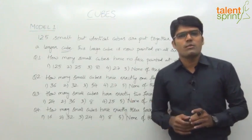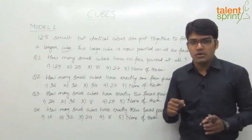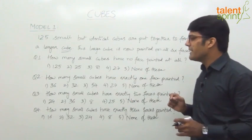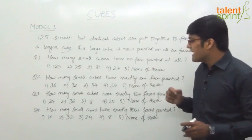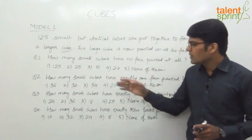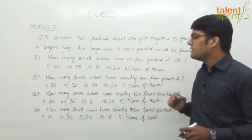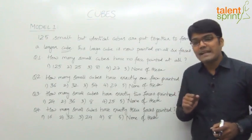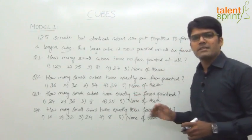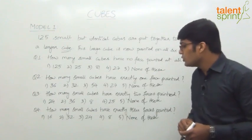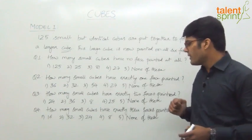Now four questions follow. Question 1: How many small cubes have no face painted at all? Options: 125, 25, 81, 27, none of these. Question 2: How many small cubes have exactly one face painted? Options: 36, 32, 54, 27, none of these. Question 3: How many small cubes have exactly two faces painted? Options: 24, 36, 8, 125, none of these. Question 4: How many small cubes have exactly three faces painted? Options: 16, 32, 24, 8, none of these.